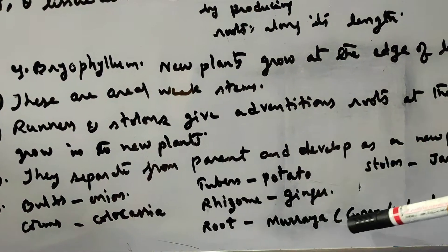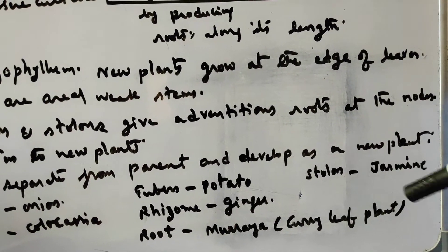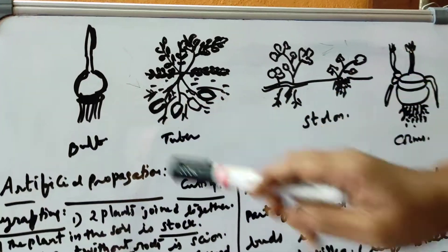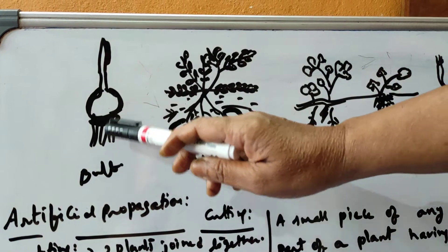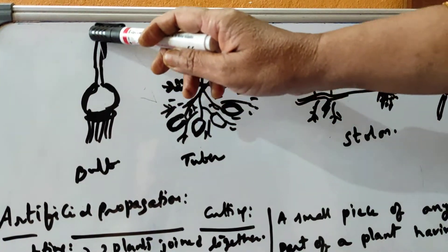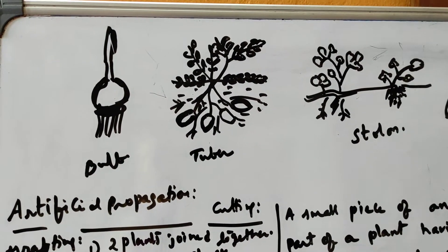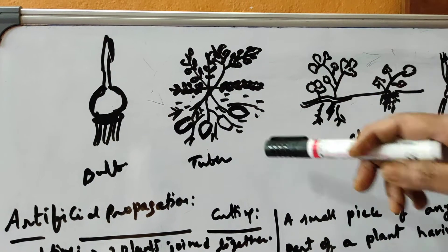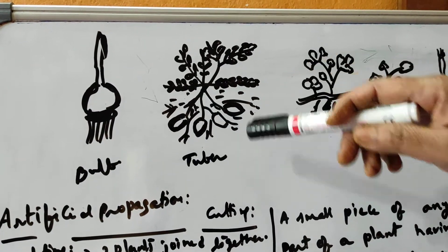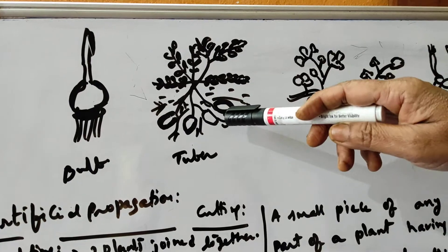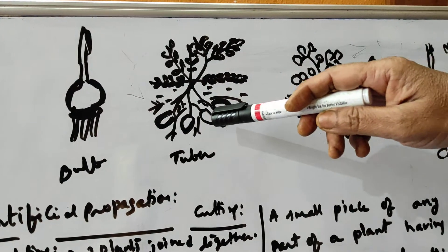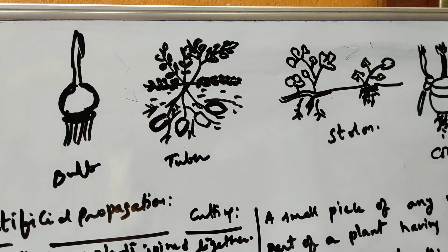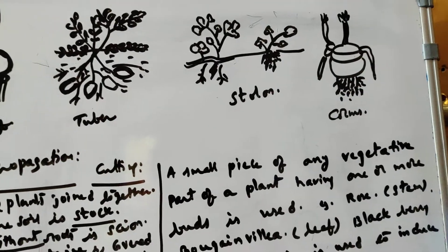The new plants gradually separate from the main parent and develop as new plants. Examples include bulbs like onion, corms like colocasia, tubers like potato, rhizomes like ginger, and roots like Murraya (curry leaf plant, called karwepaku in Telugu). Stolons are seen in jasmine. Looking at the diagrams: a bulb like onion or garlic develops into a new plant underground, and from the potato tuber, the eyes of the potato grow into new plants.